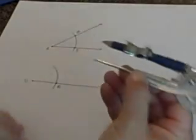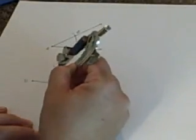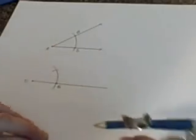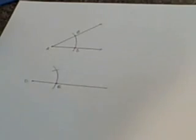Now we use that measure to set our compass point on E and draw an arc which intersects the arc we just created on our copy.